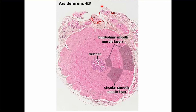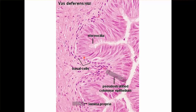Coming to vas deferens. It has a mucosa, then a muscle layer in which the inner and outer are longitudinal layers and the middle is a circular layer, and the outermost is adventitia. The epithelium is pseudostratified columnar epithelium with principal cells and basal cells, with stereocilia. You can see the lumen — it is a high-focus section.